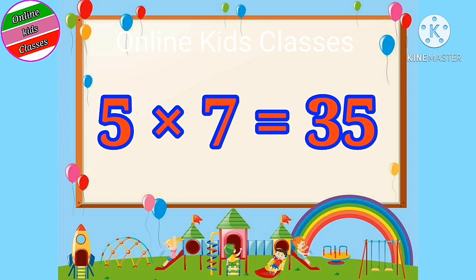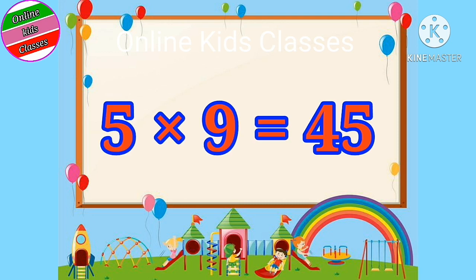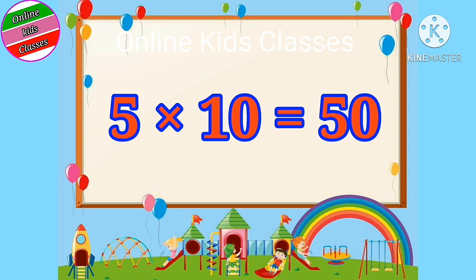Five sevens are thirty-five. Five eights are forty. Five nines are forty-five. Five tens are fifty.